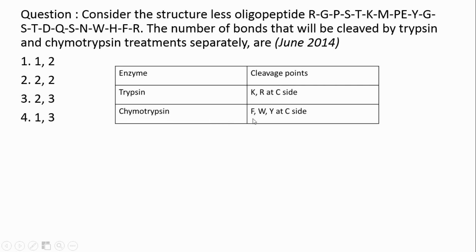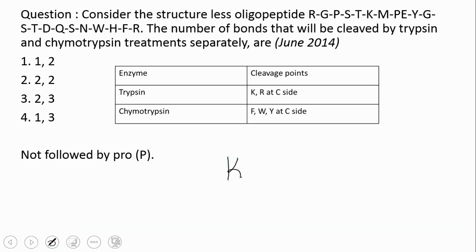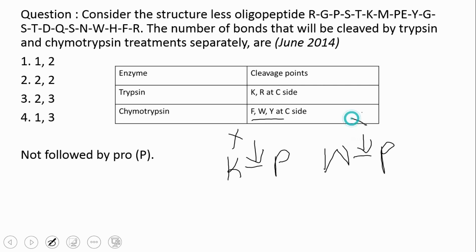Chymotrypsin cleaves phenylalanine (F), W that is tryptophan, and Y that is tyrosine, at the C-terminal or C-side. These cleavages should not be followed by proline. If K has proline next to it, trypsin cannot cleave that bond. Similarly, if any of these three amino acids has proline next to it, chymotrypsin cannot cleave that bond.